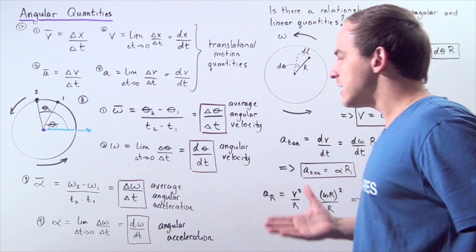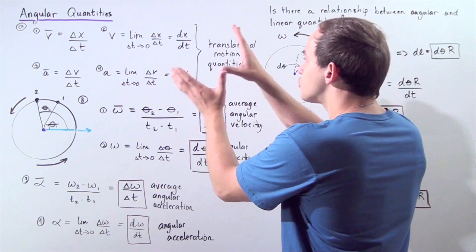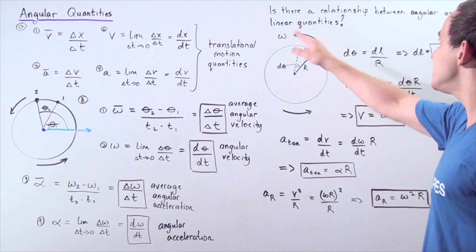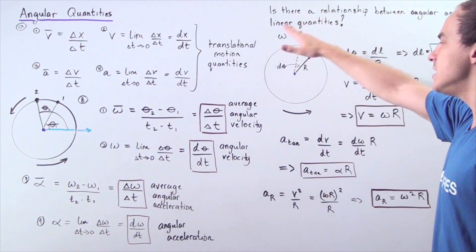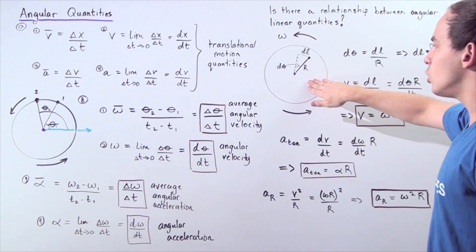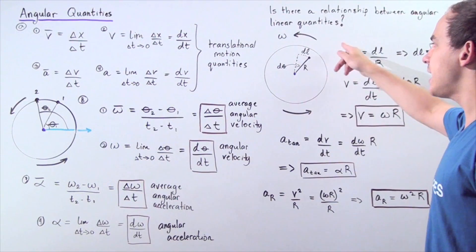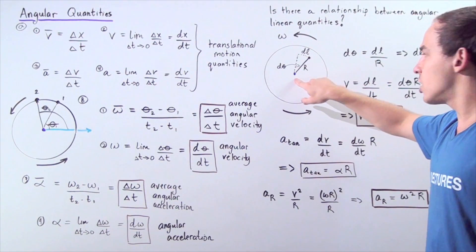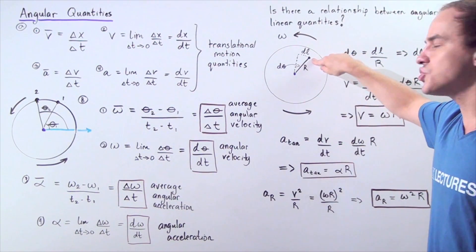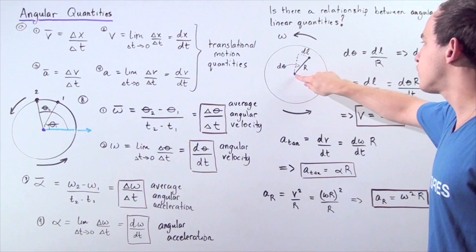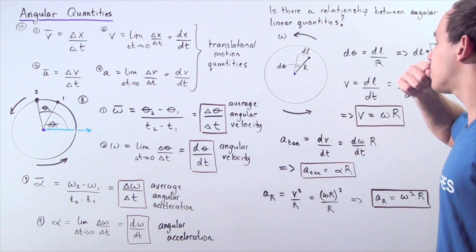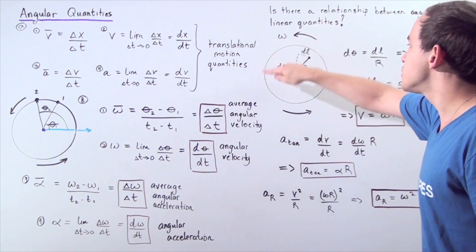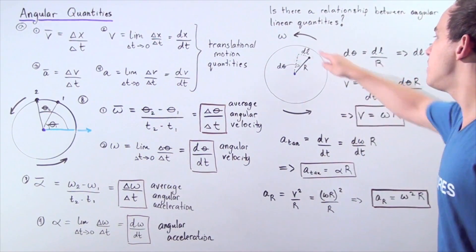We now want to find out if there is a relationship between translational linear quantities and angular quantities. Let's examine a rotating object rotating in the counterclockwise positive direction. This is our axis of rotation. We choose a point, and the distance from the axis of rotation to that point is given by uppercase R — the radius of the circle circumscribed by this point as it moves about the axis.